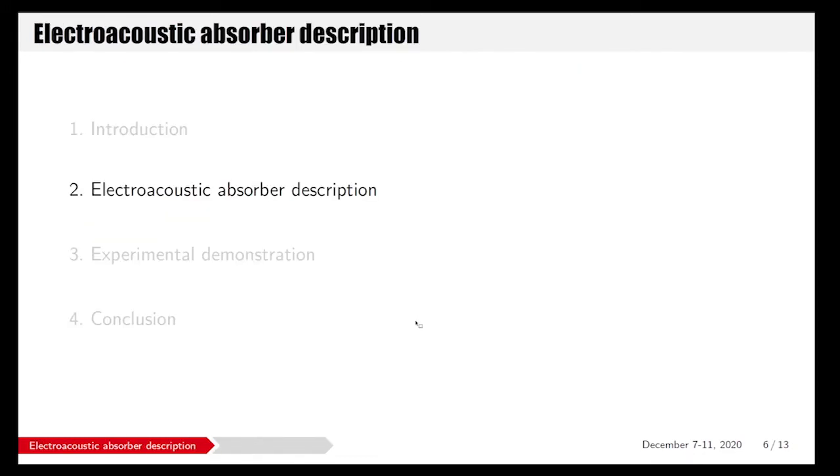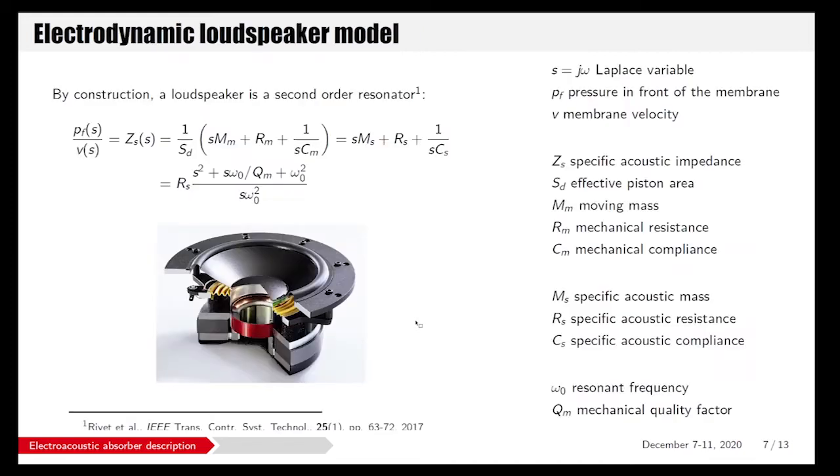So we developed a concept of electroacoustic absorber, which is basically using a loudspeaker with an enclosure. The loudspeaker being characterized by its Thiele-Small parameters: the mass, the resistance, and the compliance of the membrane. Stiffness divided by the surface gives you the specific acoustic impedance, which is the ratio of the pressure over the velocity if you use this resonator as a sound absorber. You can also use this expression with the resonant frequency omega_0 and the mechanical quality factor Q_m.